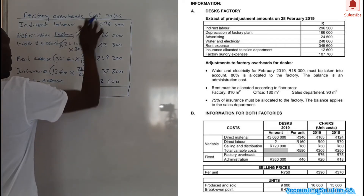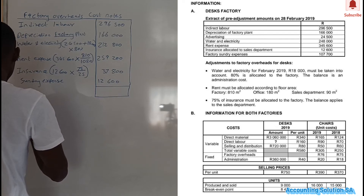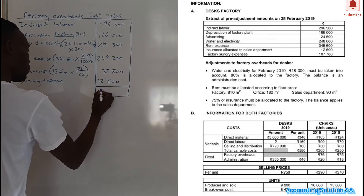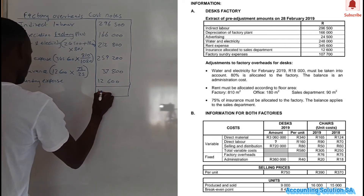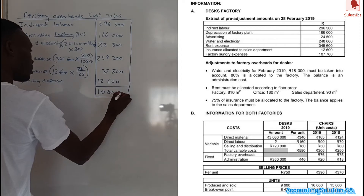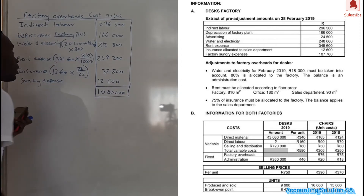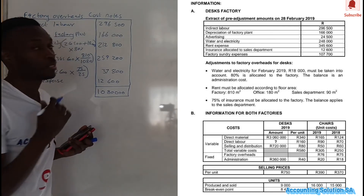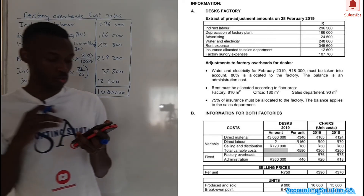After that, add everything from the first item to the last one, and you will get the total factory overhead of 1,080,000. That is how we prepare the factory overhead note for this question.